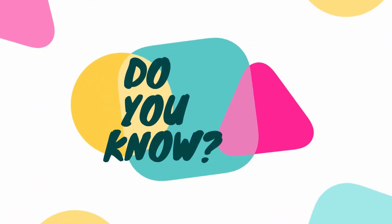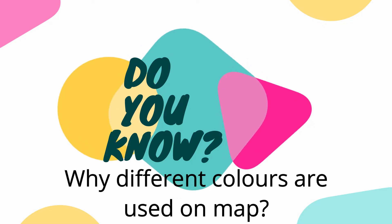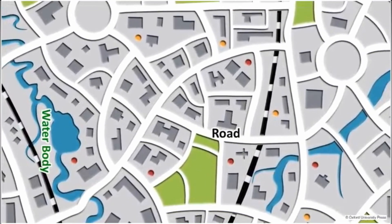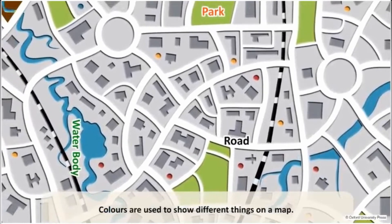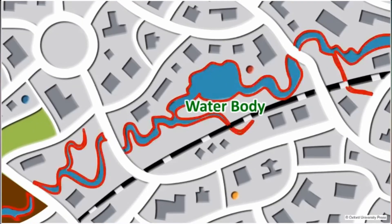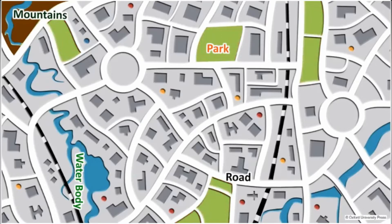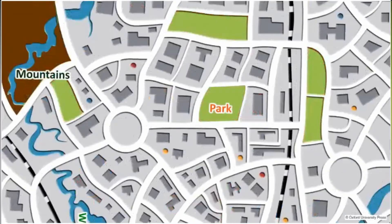Do you know why different colors are used on a map? Colors are used to show different things. For example, blue is used to show water bodies, green is used to show fields, forests and trees, and brown is used for mountains and hills.